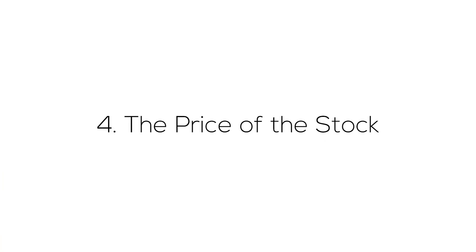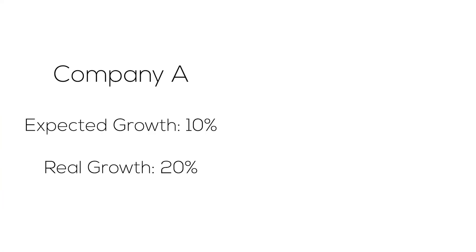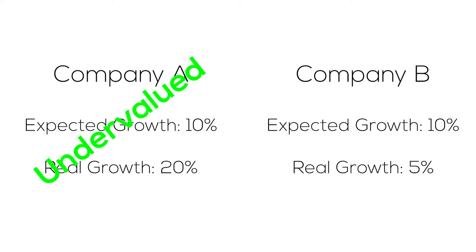The fourth and last dimension is the price we pay for those companies. The price is basically a reflection of the expectations investors have for the growth of that company. If we understand the company far better than most people, we can determine if it's undervalued or overvalued. For example, if a company has a projected 10% growth but you know it can realistically achieve over 20%, then it's undervalued. Conversely, if management cannot sustain the projected growth over time, the company is overvalued.